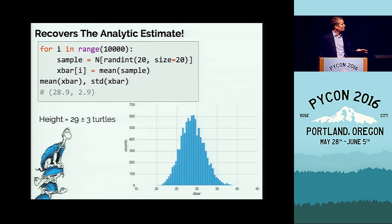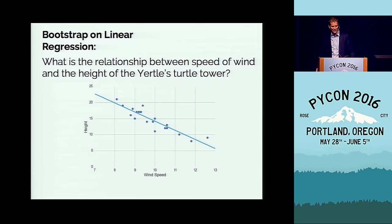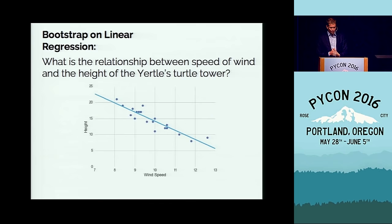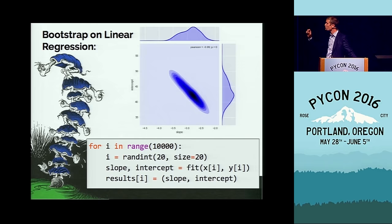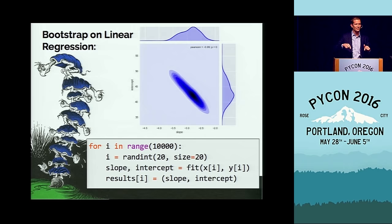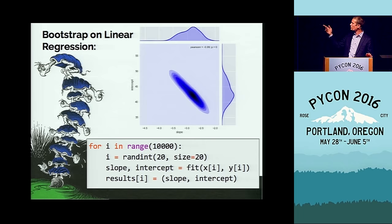The nice thing about bootstrapping is you can apply it to even more complicated statistics. Say we measure not only the height of Yertle's towers but also the wind speed, and we want to know how wind speed relates to tower height. We plot this line on the data, measure the slope and intercept, and if you do the bootstrap resampling — computing slope and intercept on resampled data — you get a nice estimate of the confidence interval, giving a general idea of what range of slopes and intercepts to expect from the small sample.